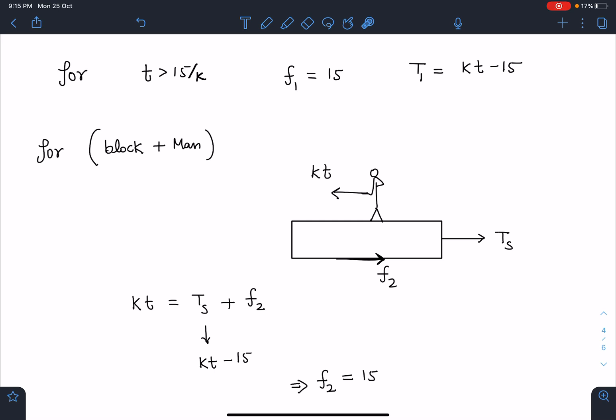That means this friction value, which is maximum up to 30 Newton, cannot exceed in this situation more than 15. It becomes constant because whatever extra force due to kt is increased, that is passing over to the same system with the help of the string. And that's the reason after F2 reaches 15, it will become constant.